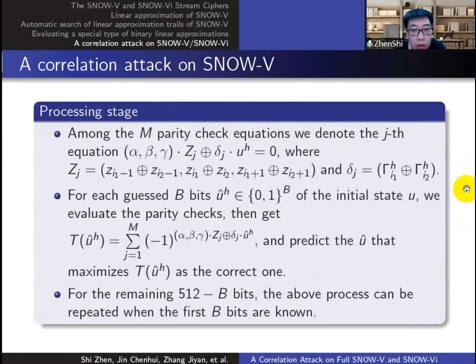In the processing stage, we set up the statistic t, evaluate each parity check equation by plugging output words and guessed initial states, and predict the u-hat that maximizes t as the correct one. For the remaining bits, we can recover them by repeating the same process.